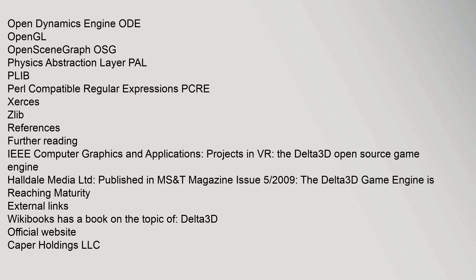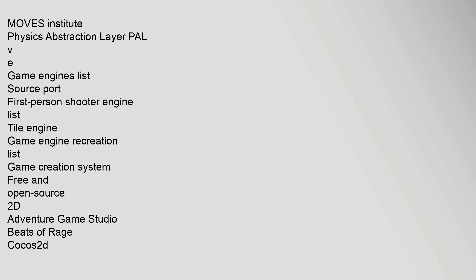References and further reading include: IEEE Computer Graphics and Applications, Projects in VR: the Delta 3D Open Source Game Engine, published by Haldale Media Limited, and the MOVES Institute Physics Abstraction Layer (PAL). Additional resources include the VE Game Engines List, Source Port, First Person Shooter Engine List, and Tile Engine Game Engine Recreation List.